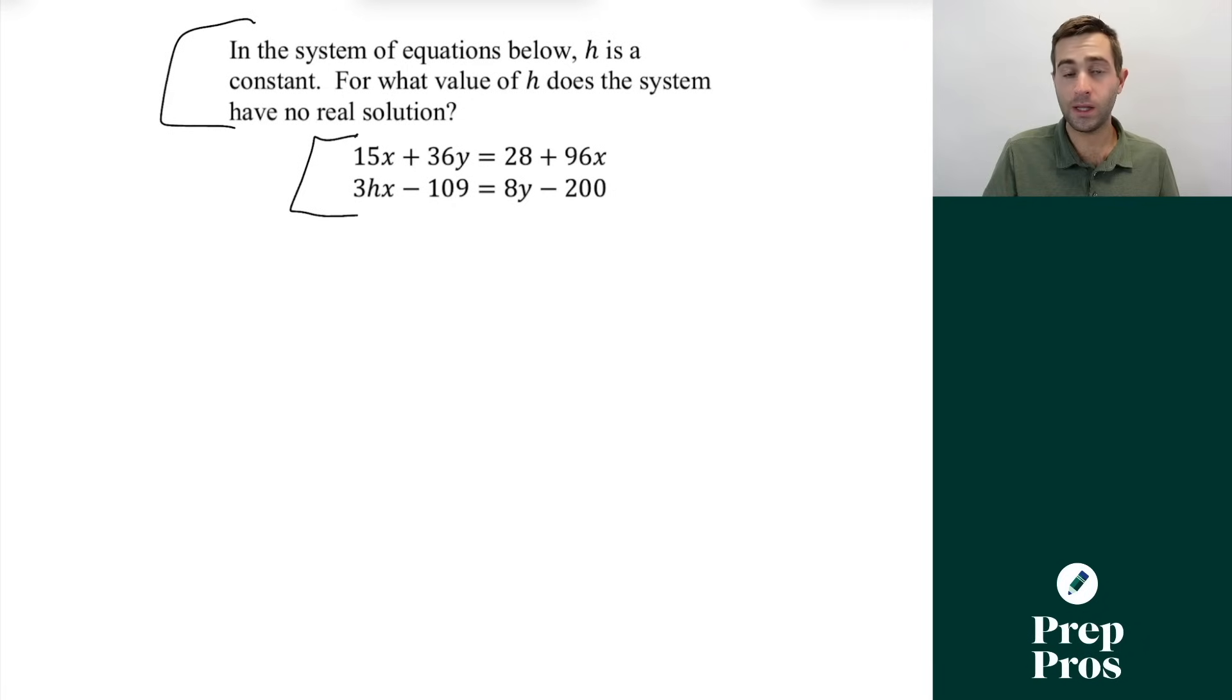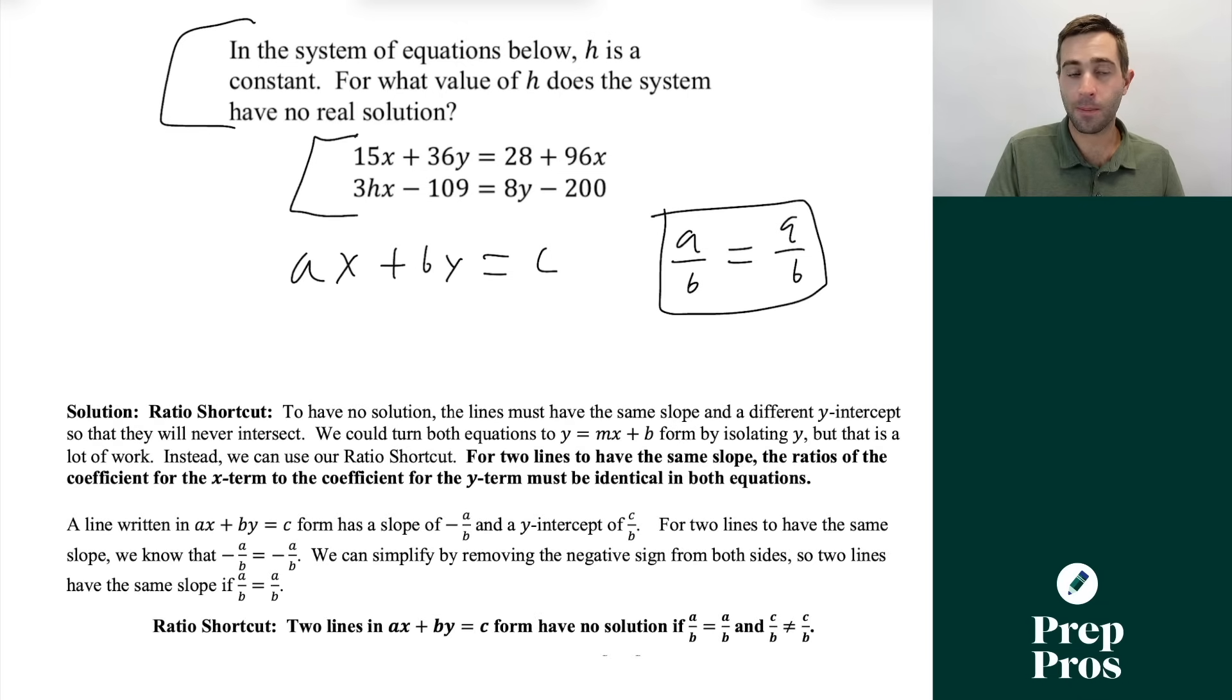Now this looks really messy and overwhelming, but one trick that makes these a lot easier is if we put linear equations in the form ax plus by equals c, if the ratio of a to b is the same in both equations, that tells us that they have the same slope, and that will let us solve for no solution. Now I'm going to kind of pop up on the screen a page for my book, which is going to go into that a little bit more detail. But that's a really important way that you can take these questions and make them way easier.